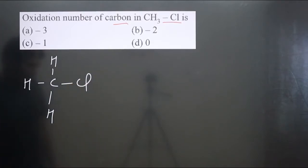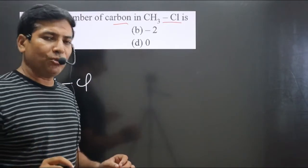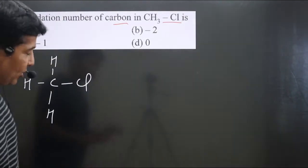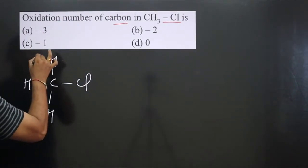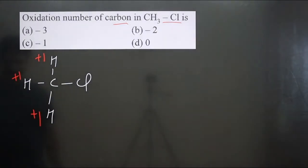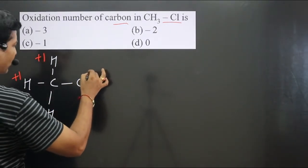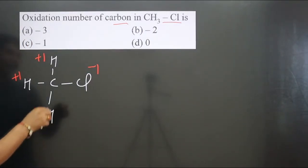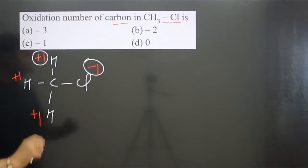Always keep in mind: hydrogen attached to non-metals always shows a +1 oxidation number. So these hydrogens are each +1. And this hydrogen — the one attached to chlorine — is -1. You can see +1 and -1 will be equal to zero.